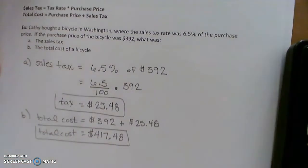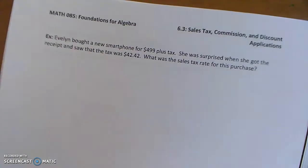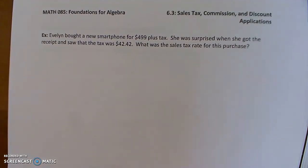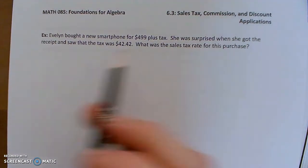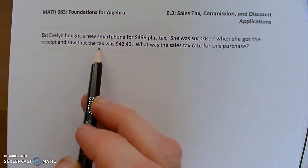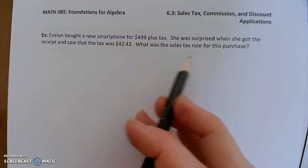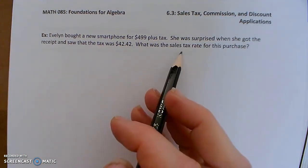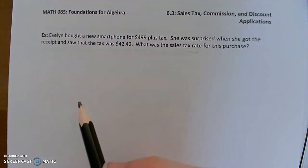So now anything involving sales tax, we should be able to solve those types of problems. Now here's another example. Evelyn bought a new smartphone for $499 plus tax. She was surprised when she got the receipt and saw that the tax was $42.42. What was the sales tax rate? Maybe she wasn't aware of what the percentage would be.